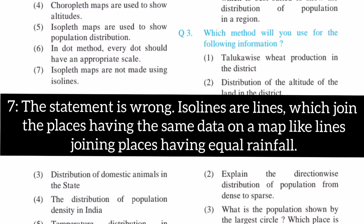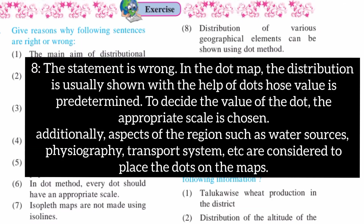7. Isopleth Maps are not made using isolines. 8. Distribution of various geographical elements can be shown using the dot method.